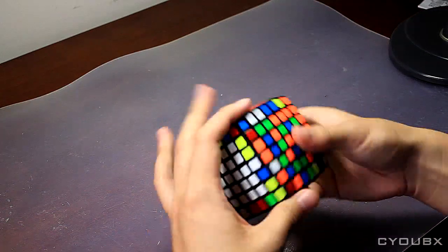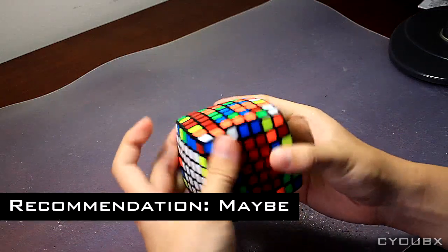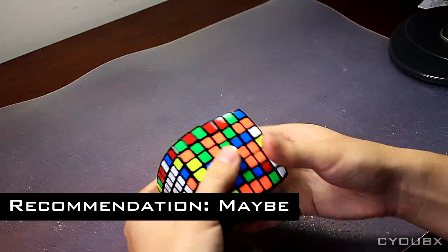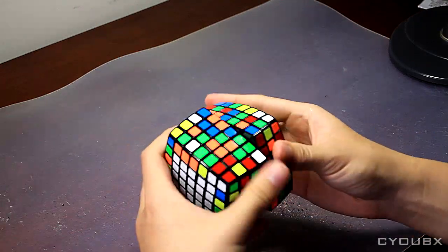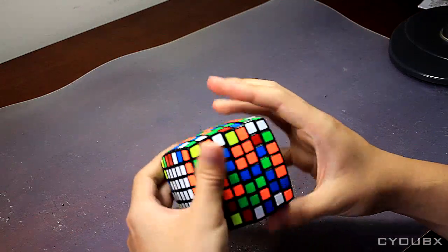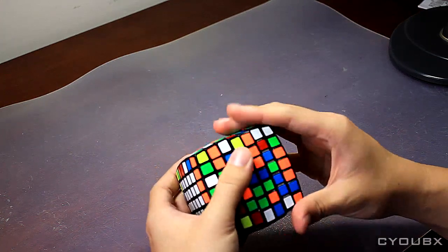Overall, I wouldn't recommend the Moyu AoFu to all cubers. The AoFu is similar in performance to a mini Xingxiao 7x7 with improvements and drawbacks. The cube has a more crispy feel compared to the Xingxiao, and corner cutting is slightly better.